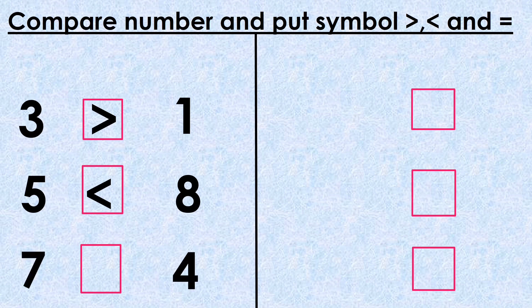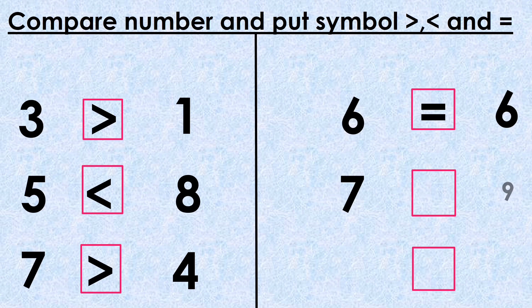Seven is greater than four. Six is equal to six. Seven is less than nine. Two is equal to two.